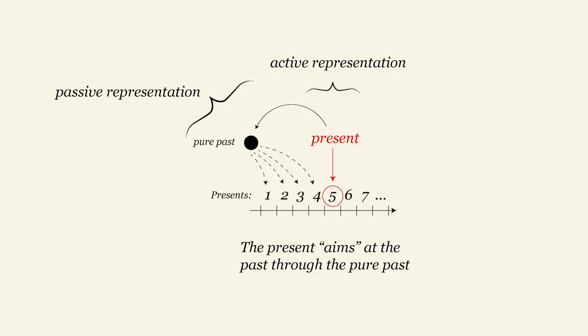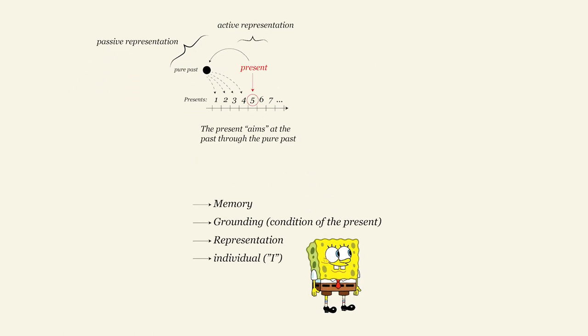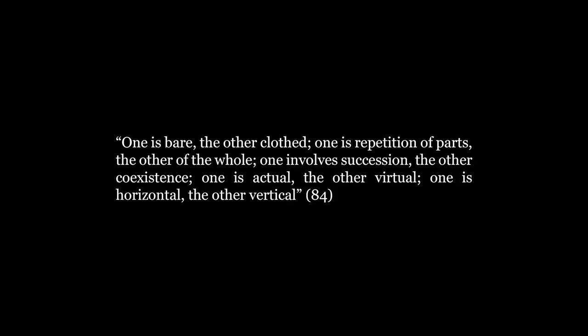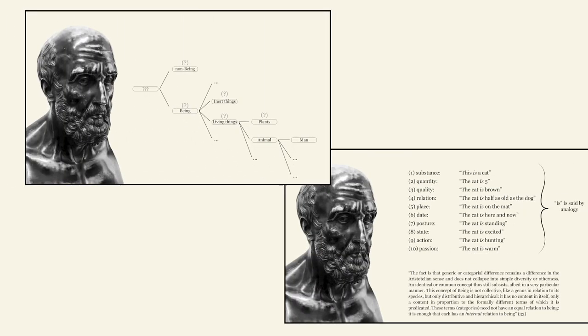So, the spiritual repetition is really about the subject, which appears when pure past provides the ability to aim at former presence, and regroup them, in the totality of an individual history. These two repetitions are complementary. One is bare, the other clothed. One is repetition of parts, the other of the whole. One involves succession, the other coexistence. One is actual, the other virtual. One is horizontal, the other vertical. But this creates a whole new problem.